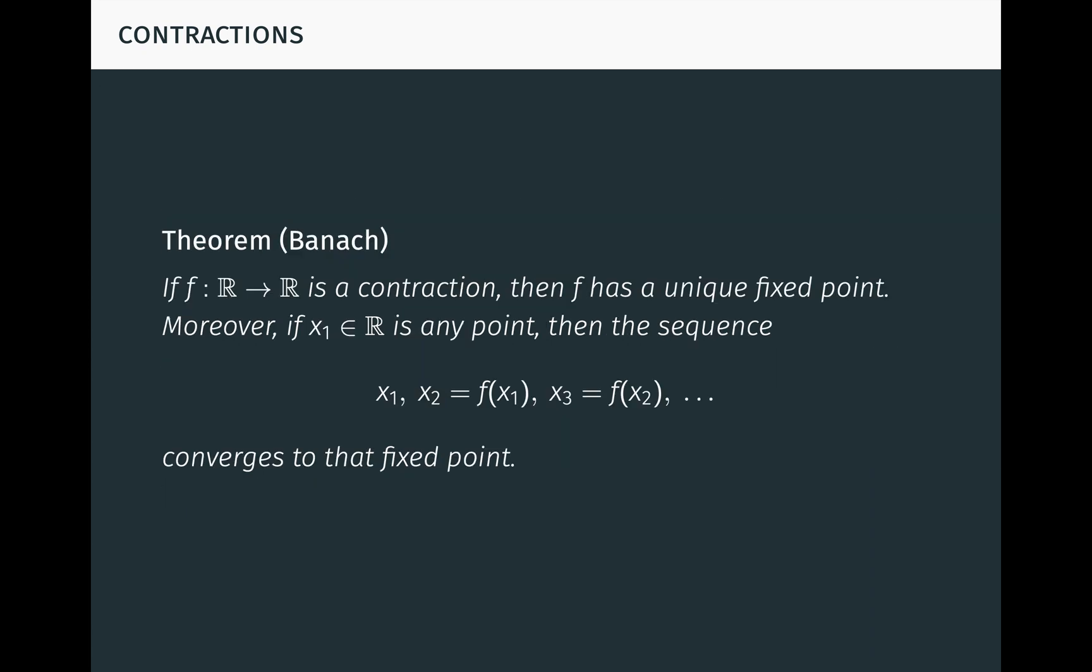This leads us to Banach's fixed point theorem, also known as the contraction mapping theorem. It says that if f is a contraction, then f has a unique fixed point. Moreover, if x1 is an arbitrary point, then the sequence obtained by repeatedly applying f, starting at x1, converges to that fixed point. This theorem generalizes to arbitrary complete metric spaces and has many important applications.